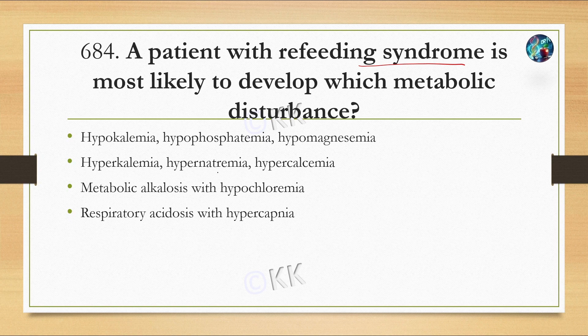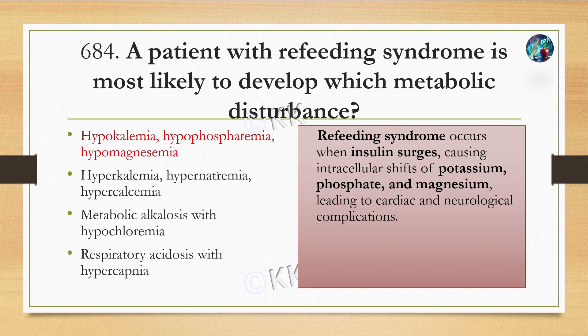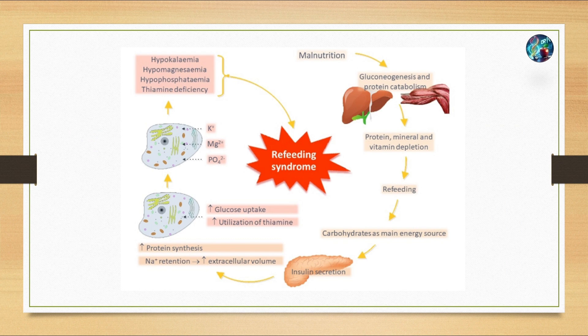The correct option is A: hypokalemia, hypophosphatemia, and hypomagnesemia. Refeeding syndrome occurs when insulin surges, causing intracellular shift of potassium, phosphate, and magnesium, leading to cardiac and neurological complications. As shown in the diagram, refeeding syndrome links hypokalemia, hypomagnesemia, hypophosphatemia, and thiamine deficiency.